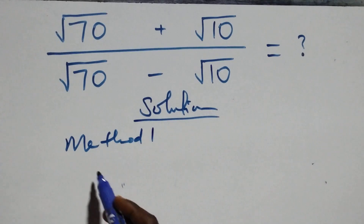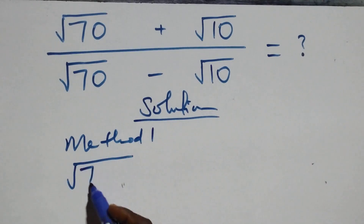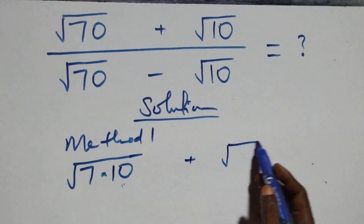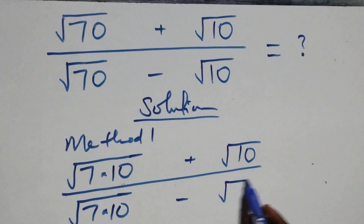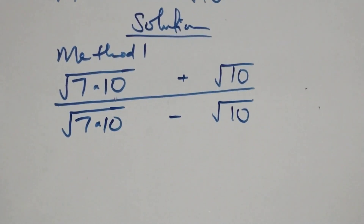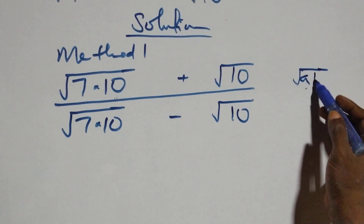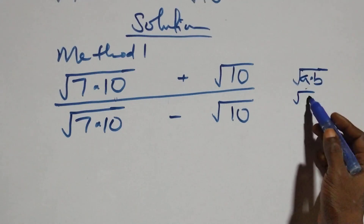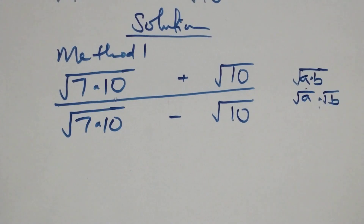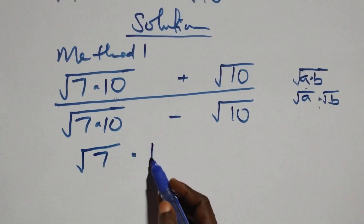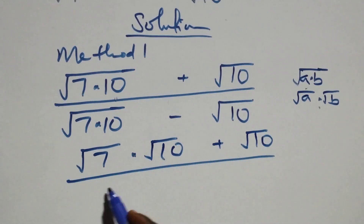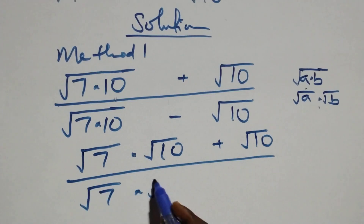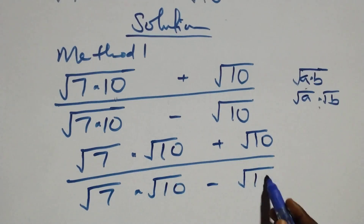From here we can write what we have as √(7×10) plus √10, divided by √(7×10) minus √10. When we have √(a×b) we can separate this as √a times √b, so this becomes √7 times √10 plus √10, divided by √7 times √10 minus √10.